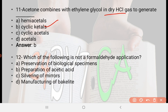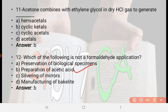Next: Which of the following is not a formaldehyde application? Option A: preservation of biological specimens, option B: preparation of acetic acid, option C: silvering mirrors, option D: manufacturing of bakelite. The right answer is option B, preparation of acetic acid. Preparation of acetic acid is not a formaldehyde application.